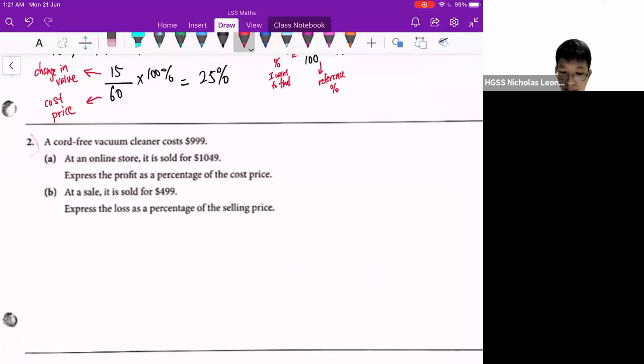Hi, students. Let's look at the second question. So this time round, they tell you that there's a vacuum cleaner that costs $999. An online store sold it for $1049. And you're asked to express the profit as a percentage of the cost price. That's part A.